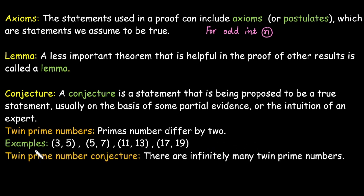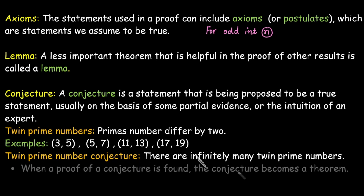Based on these, we have the twin prime conjecture, which states that there are infinitely many twin prime numbers. Many researchers have researched this statement and found large examples using supercomputers, but there is no proof available. Based on partial evidence and expert intuition we say the statement is true, so it is called a conjecture rather than a theorem. Once a proof of a conjecture is found, that conjecture becomes a theorem.